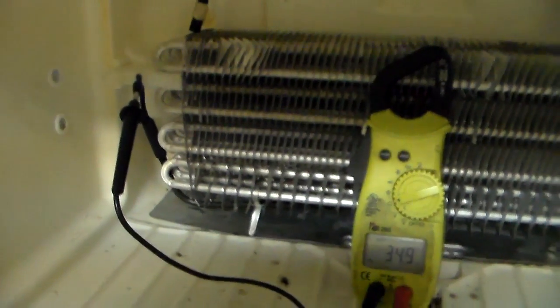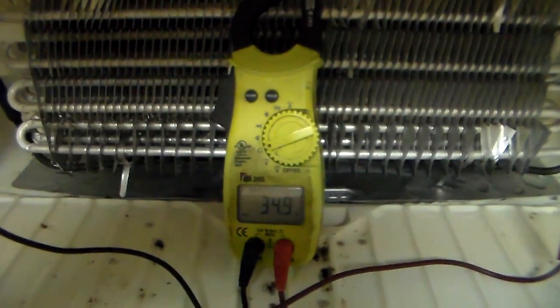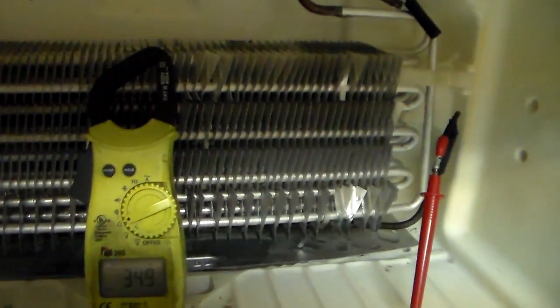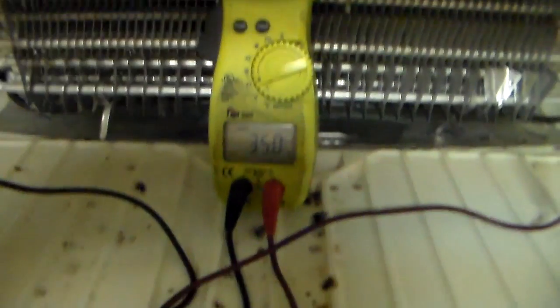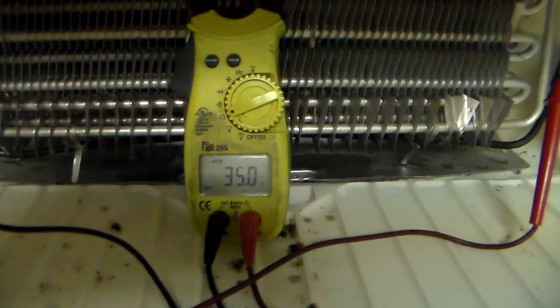So what I've done is my meter is set on ohms. One side of the heater, other side of the heater, about 35 ohms. The heater's good. So now we're going to move on from here.